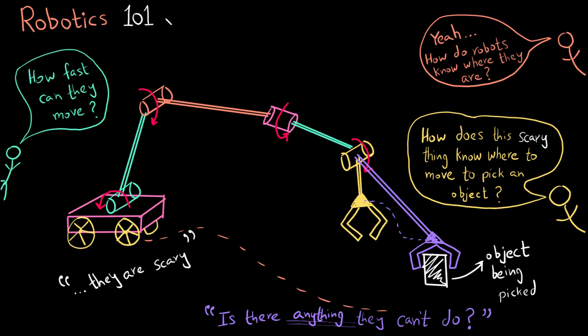In this series, we are going to talk about the kinematics and modeling of robots. Kinematics is related to the motion of the robot, while modeling is related to the design aspect of the robot.